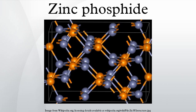Zinc Phosphide reacts with water to produce phosphine and zinc hydroxide: 2 ZN3P2 + 6H2O → 2PH3 + 3Zn(OH)2.